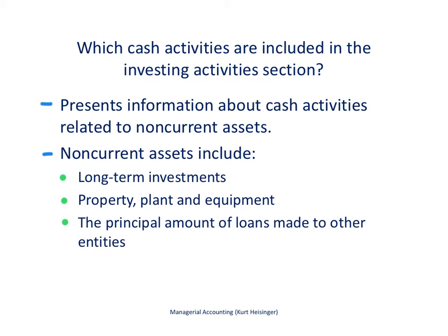The next section typically presented on the statement of cash flows is the investing activities section. This section provides cash activity information related to non-current assets. Current assets typically relate to the daily operations of the business, so activity related to current assets goes into the operating activity section. Now we're moving to the non-current asset section of the balance sheet, and any cash activity related to non-current assets — whether cash going out or coming in — would show up in the investing activities section.